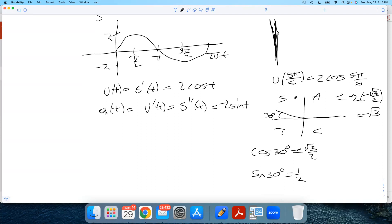My velocity is negative at that time. I can see that on the picture. That time is right here, at 5π/6. My particle is moving down there, its position is decreasing.